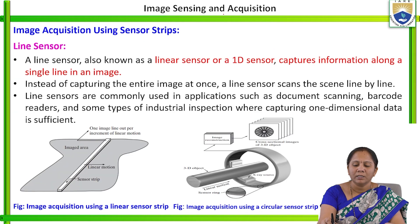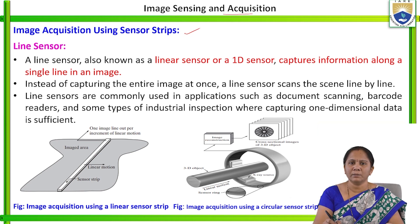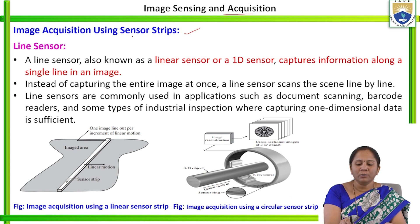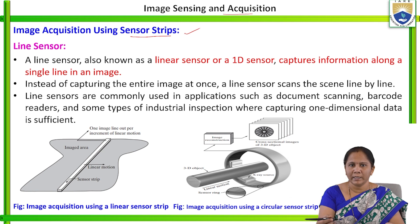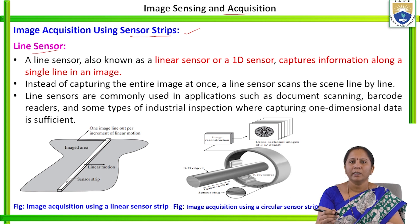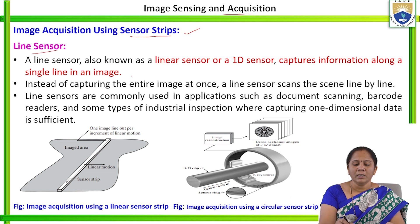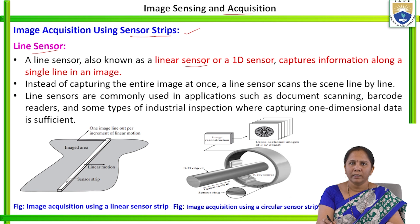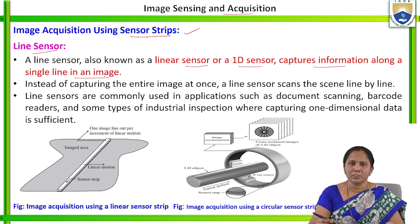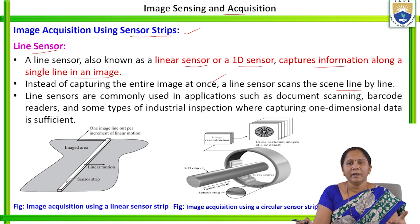The next image sensing and acquisition configuration is image acquisition using sensor strips — the second method. A strip means sensors are arranged in the form of a line, which is why it is called a line sensor. A line sensor is also known as a linear sensor or 1D sensor. Instead of capturing the entire image at once, this line sensor scans line by line.